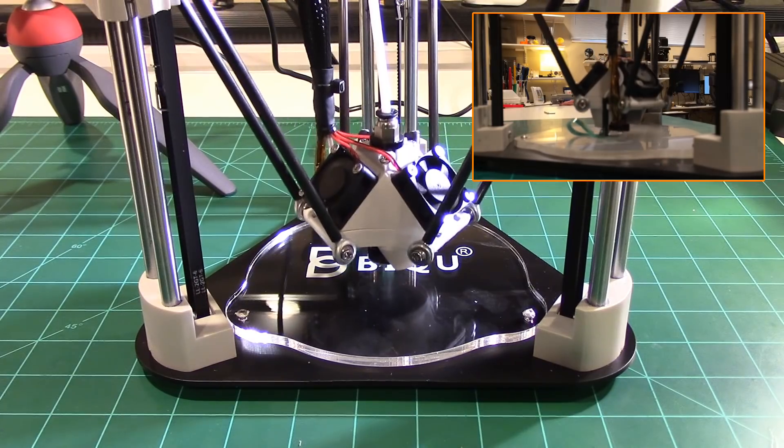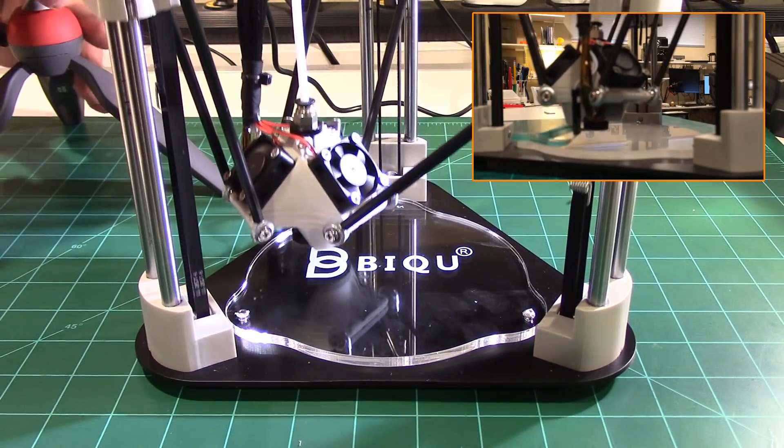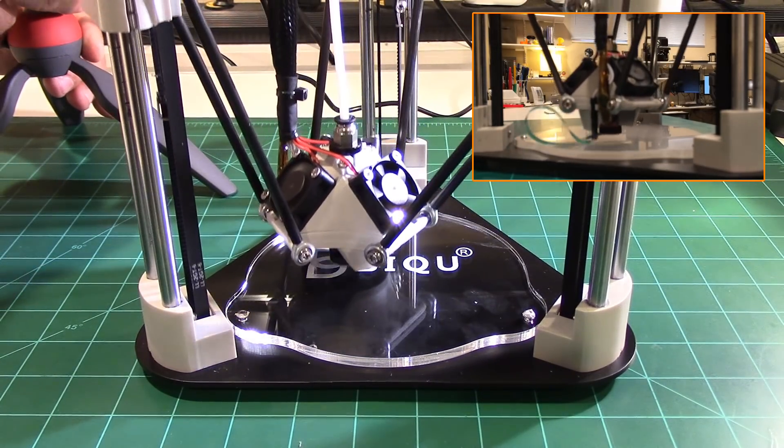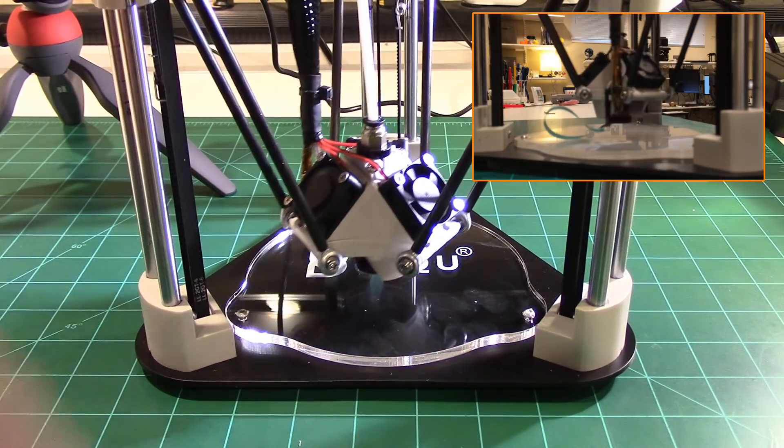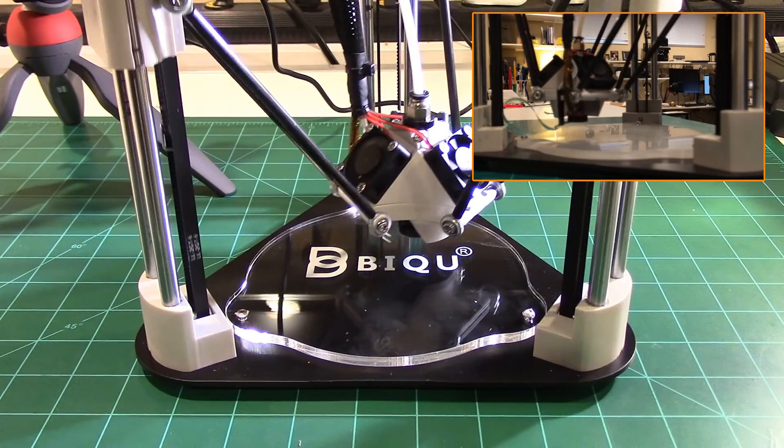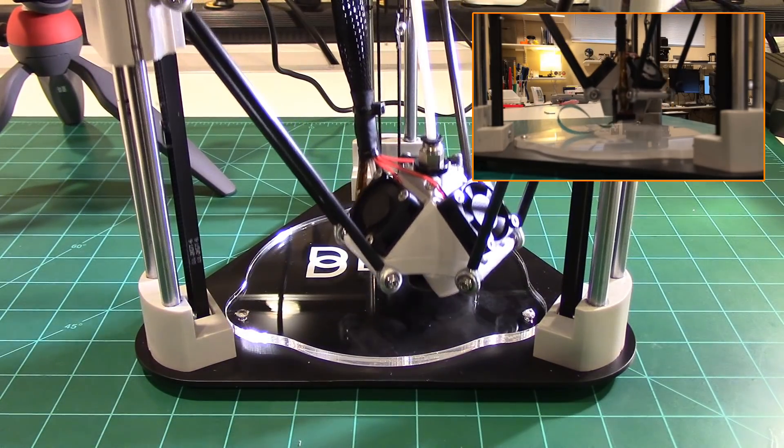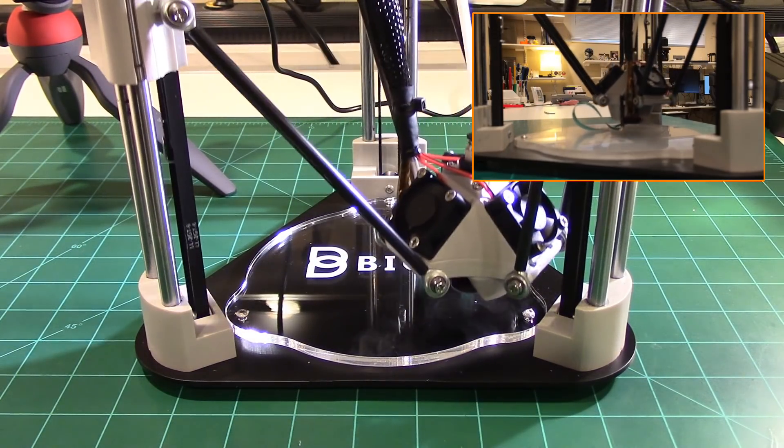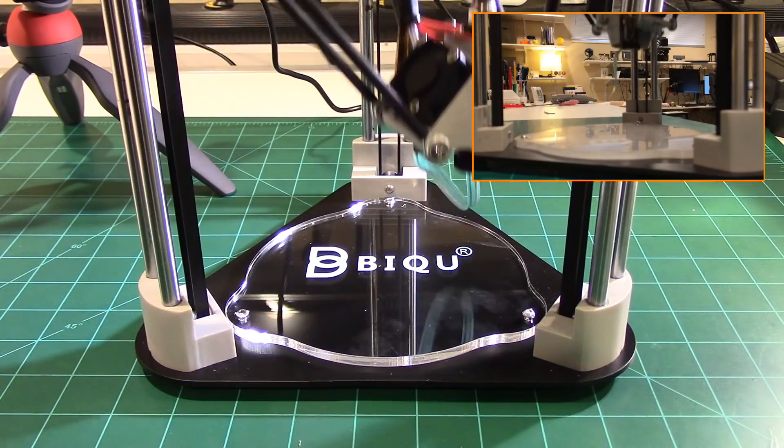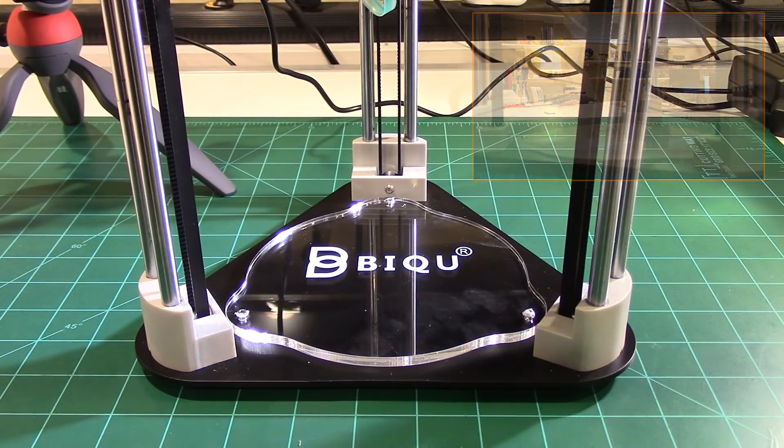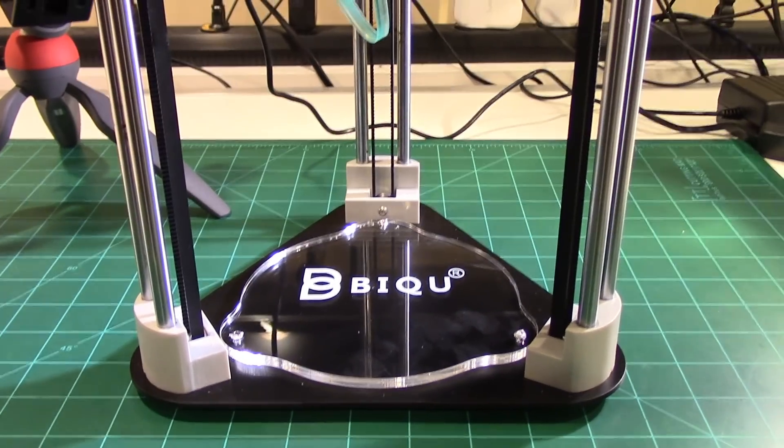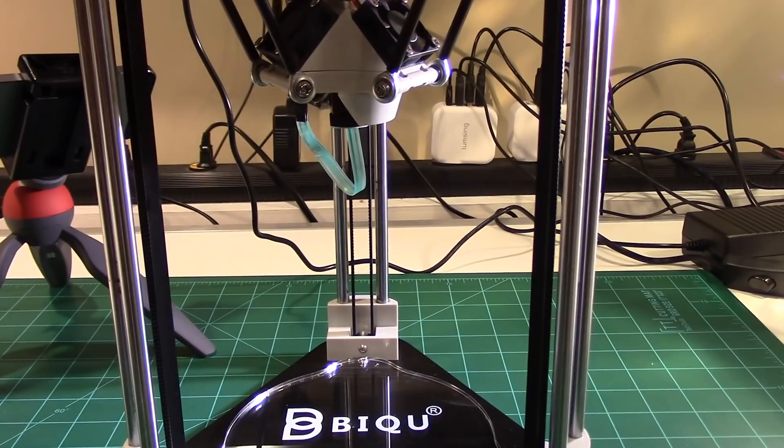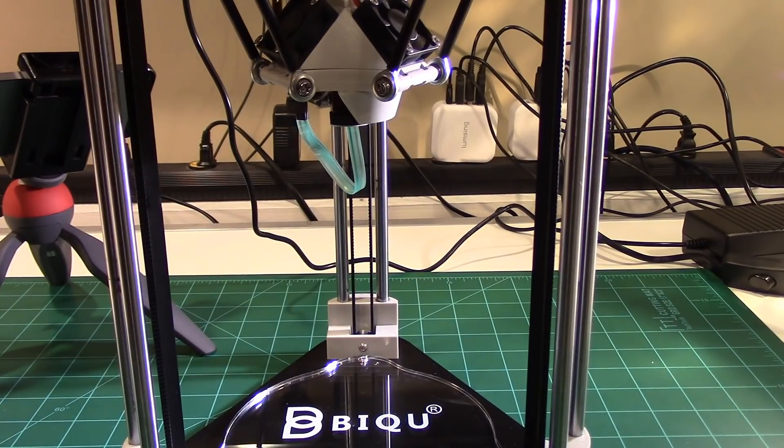And it's going to go ahead and do its thing. Now one of the things, notice how many touch points it does on the bed to come up with the level. It's definitely not three folks. All right so it's completed its level and it's now moved itself up to a safe Z position up here as you can see.